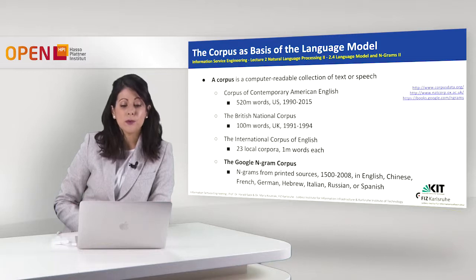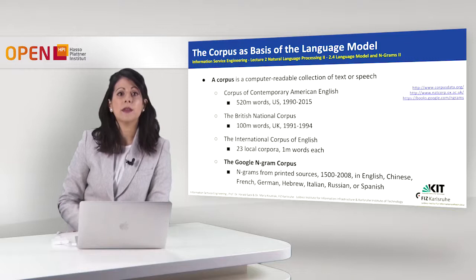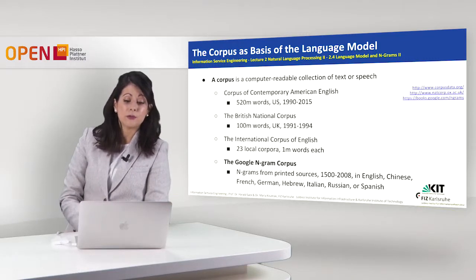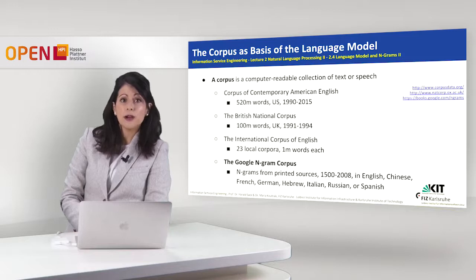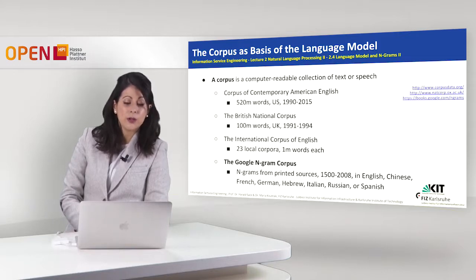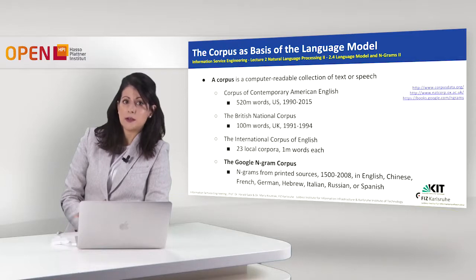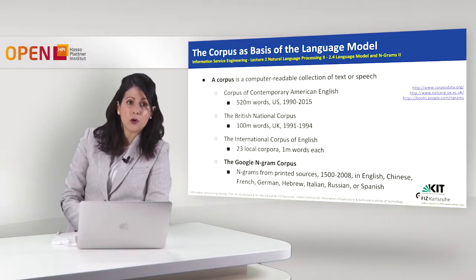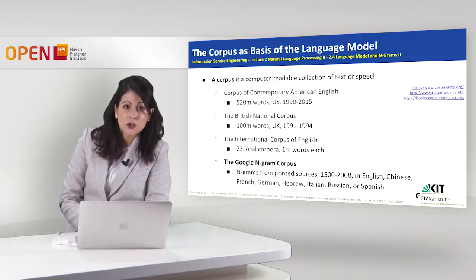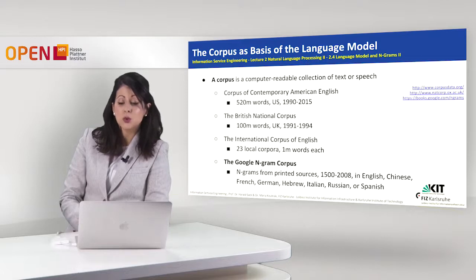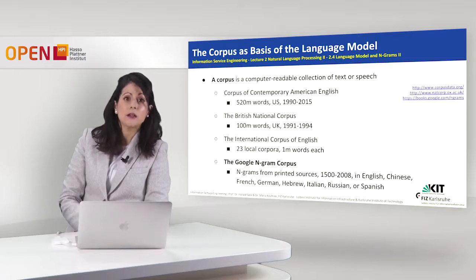First there is the Corpus of Contemporary American English, which consists of 520 million words in US English and covers the period from 1990 to 2015. Then is the British National Corpus with 100 million words in UK English, covering the period from 1991 to 1994. Then is the International Corpus of English with 23 local corpora — corpora is the plural of corpus — where each one consists of 1 million words. Last we have the Google n-gram corpus, with n-grams from printed sources collected by Google covering the period from 1500 to 2008 in languages like English, Chinese, French, German, Hebrew, Italian, Russian, and Spanish.